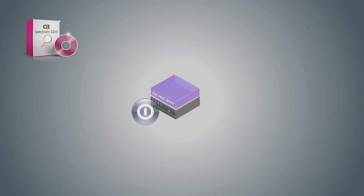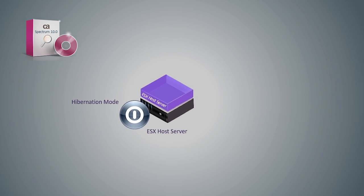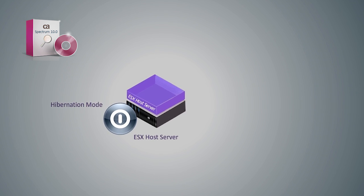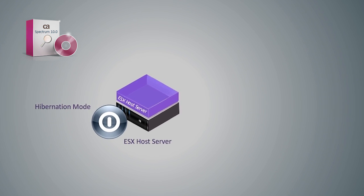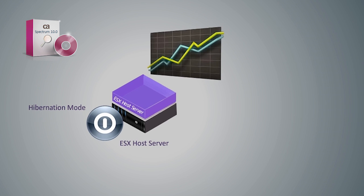You can also use CA Spectrum 10 to put the ESX server host in hibernation mode. Maintenance mode differs from hibernation mode by requiring you to disable the maintenance mode option before the device can resume normal management traffic. In contrast, hibernation mode automatically restarts normal management traffic as soon as the Spectrum server detects successful communication with the device after a successful set of polls.